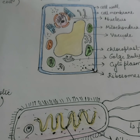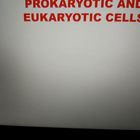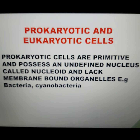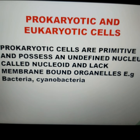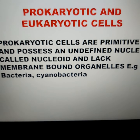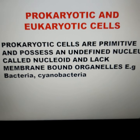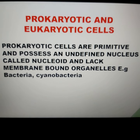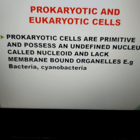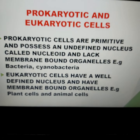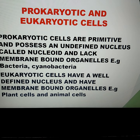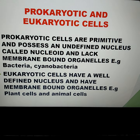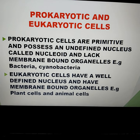We will brush up the points in the PowerPoint here. Prokaryotic cells are primitive and possess an undefined nucleus called the nucleoid. They also lack membrane-bound organelles like mitochondria, Golgi bodies, etc. Whereas eukaryotic cells have a well-defined nucleus and membrane-bound organelles. Examples are plant cells, animal cells, etc.